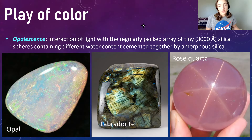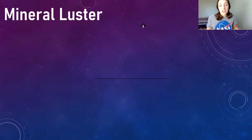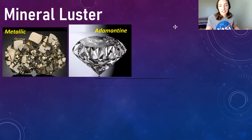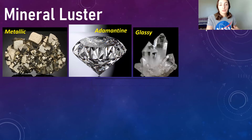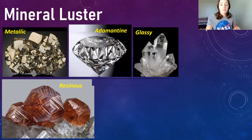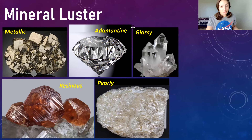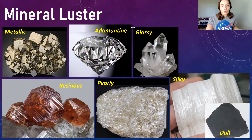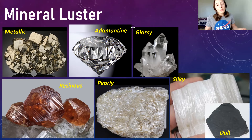Moving to mineral luster, it can be broken down into several categories including metallic (looking like metals), adamantine (as in diamonds), glassy (looks glassy), resinous (resembles the luster of resin), pearly (resembles pearls), silky (such as in gypsum), and dull or earthy. These mineral lusters can help identify broader groups of minerals but can't be the sole distinguishing feature of a specific mineral, since many minerals fall under each category.